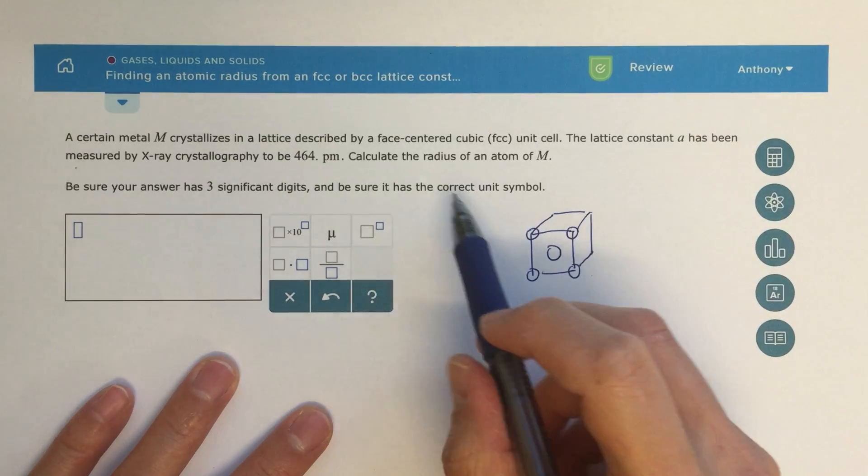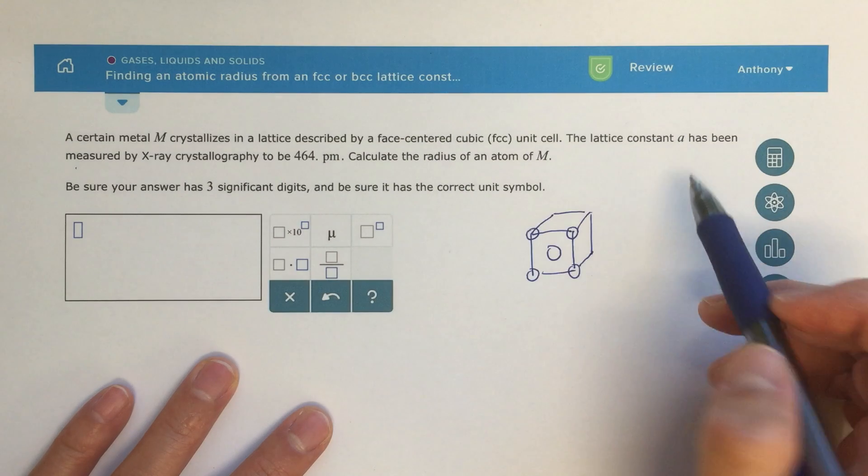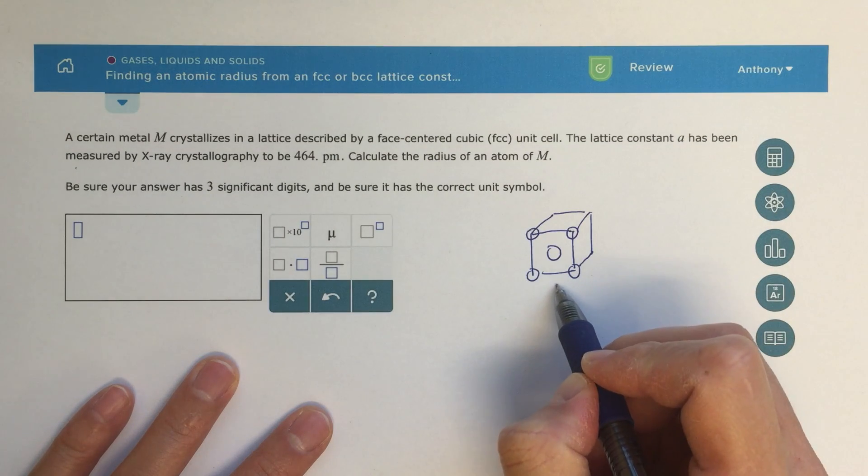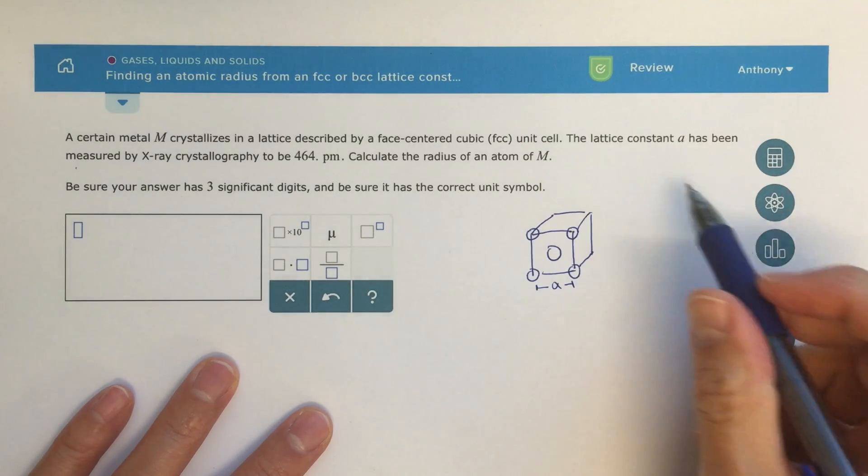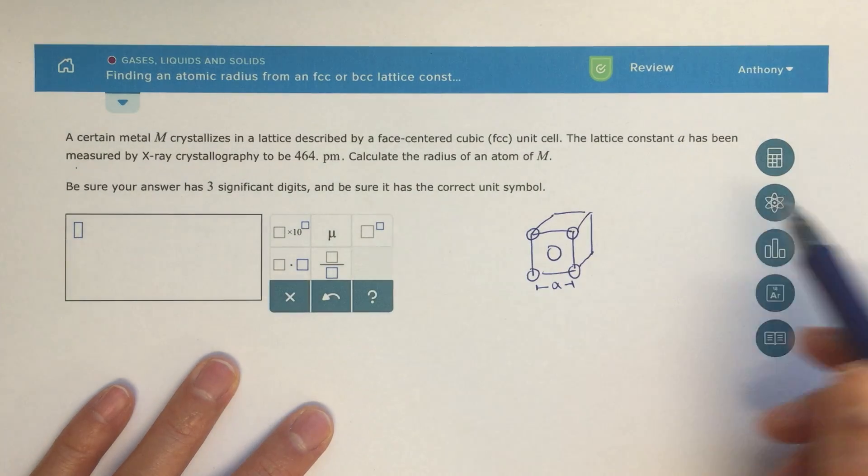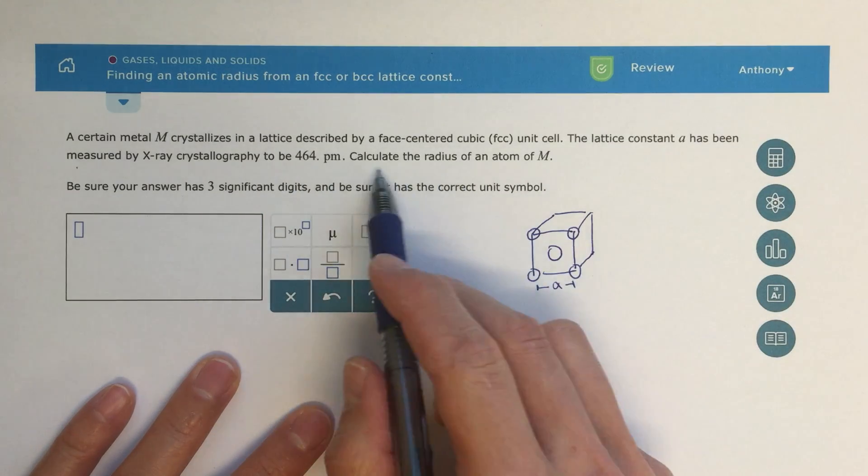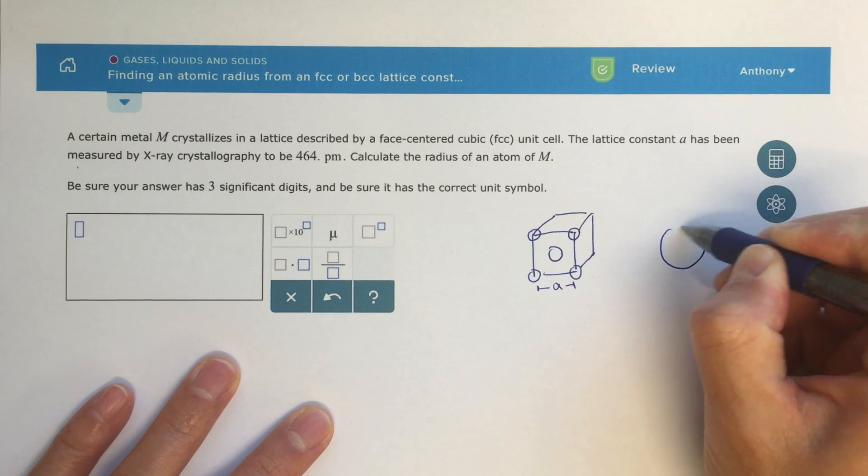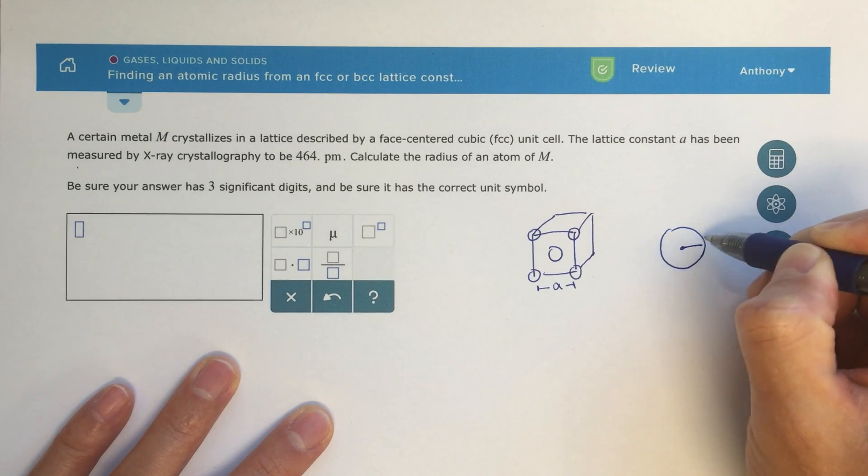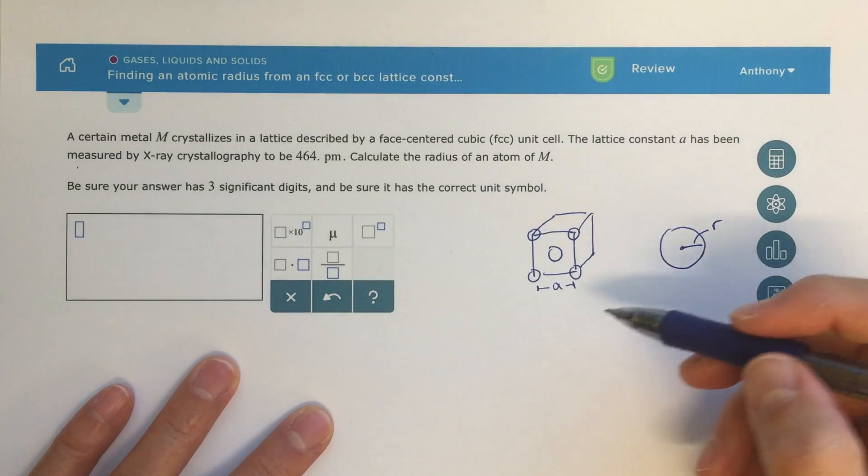It says calculate the radius of atom M and gives us the lattice constant A, so this distance here, the distance of one edge, is our alpha, our lattice constant, and that gives us a distance of 464 picometers. The radius is going to be from the center out, that's the radius R, and we need to use this information to figure this out.